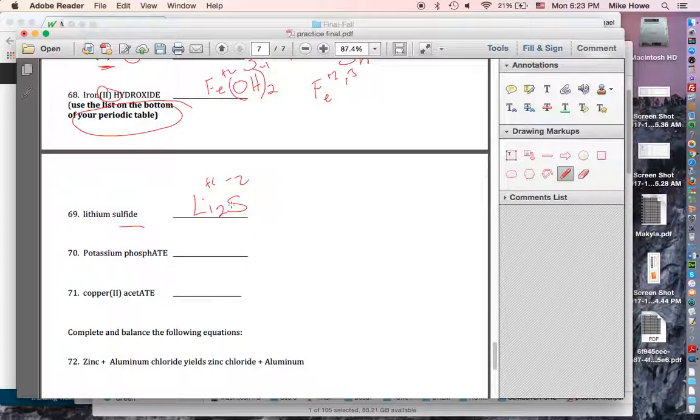And potassium phosphate is K and then PO4. Now you have to watch on your periodic table. There's a hydrogen phosphate, HPO4. There's an H2PO4 dihydrogen phosphate, and there's just a plain old phosphate. We want the plain old phosphate, which is -3.